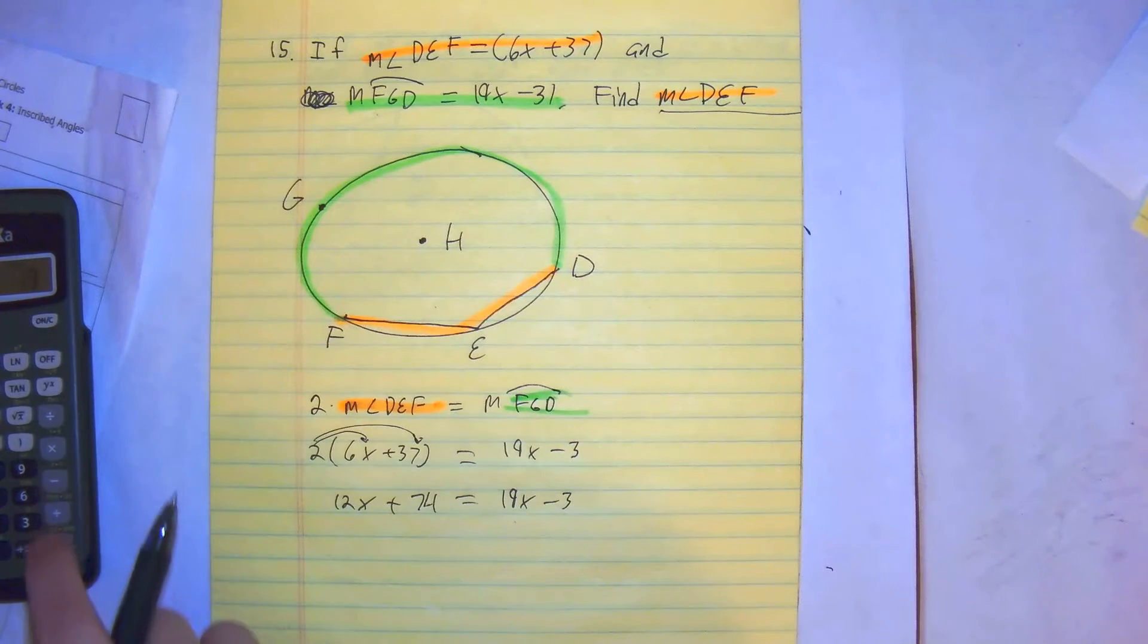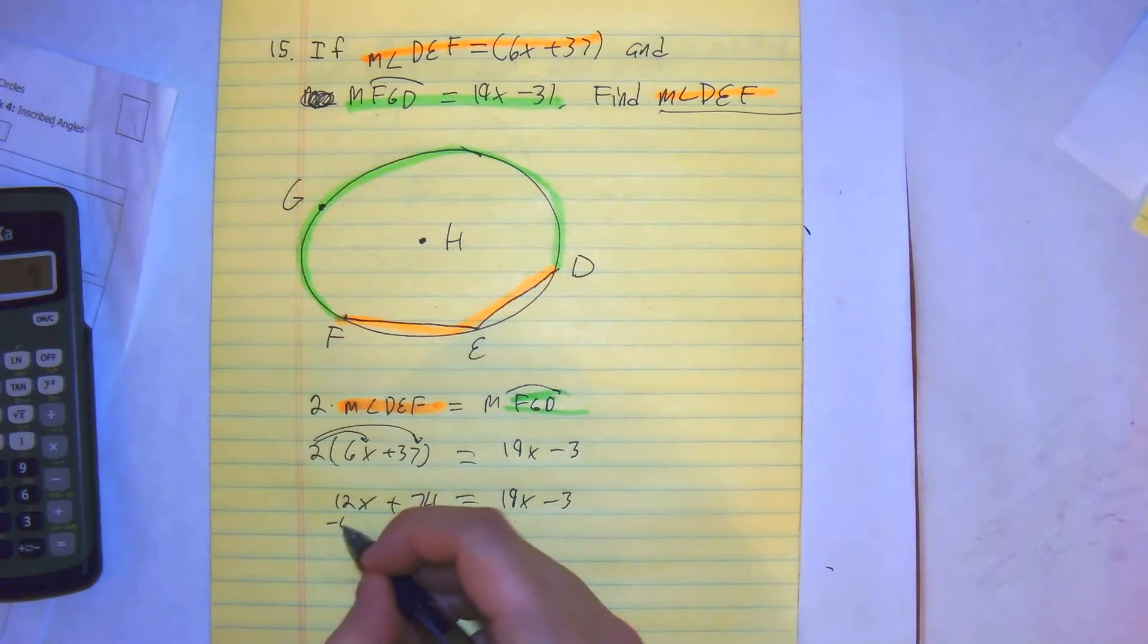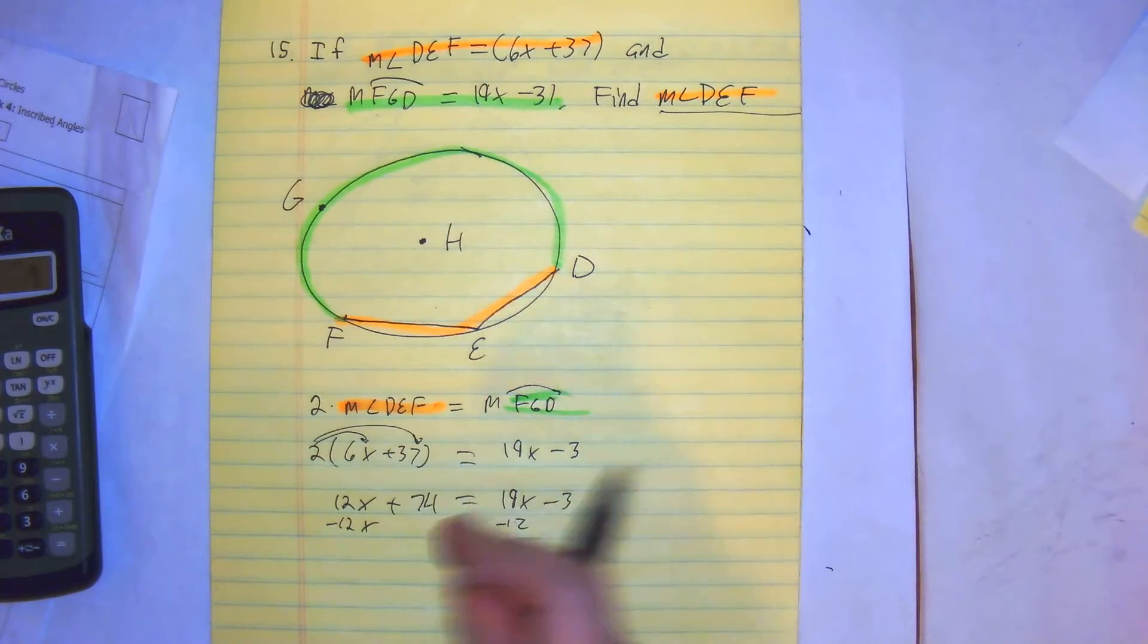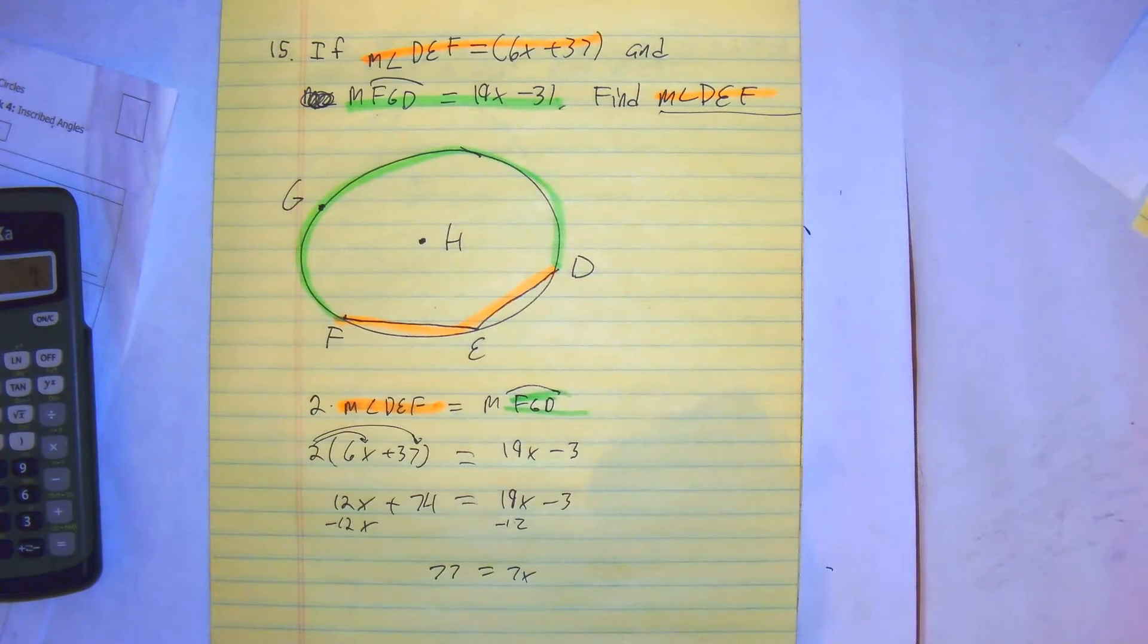19 minus 12 gets you 7. Then 3 plus 74 gives us 77. Divide both sides by 7, you get x equals 11.